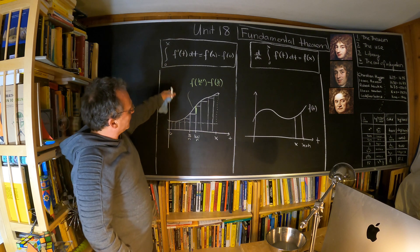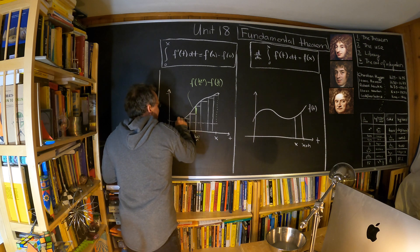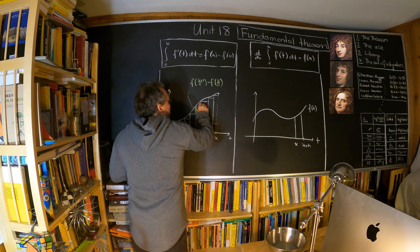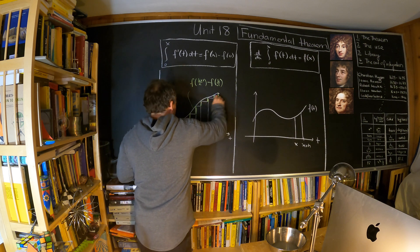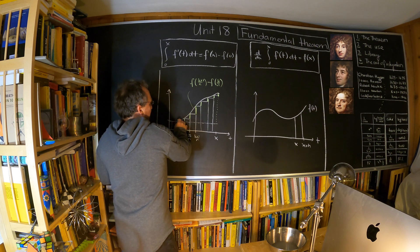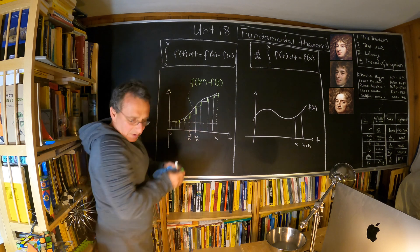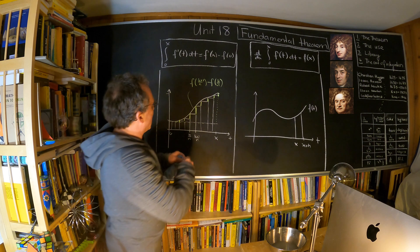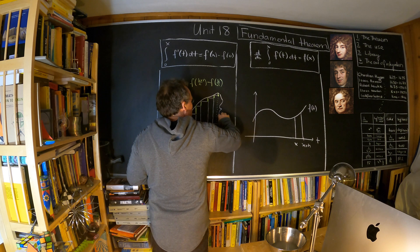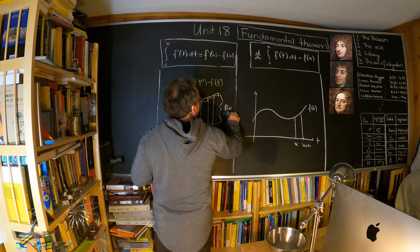When we add up all these green parts — this, this, this, and also here — what we end up with is the difference f(x) minus f(0).